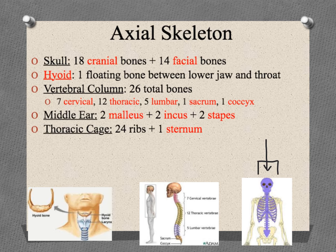The skull actually has 32 different bones: 18 of them surround the brain, and 14 of them are facial bones — seven on the left and seven on the right.